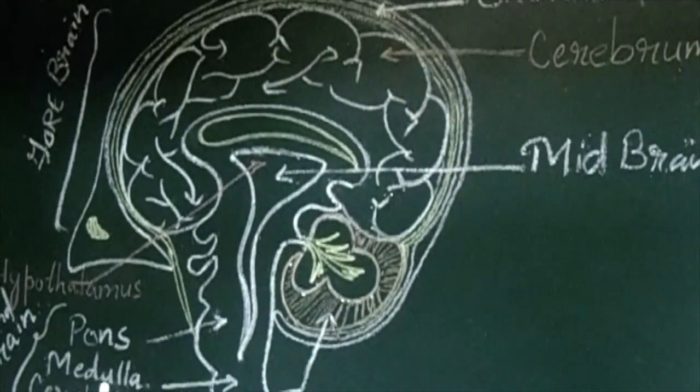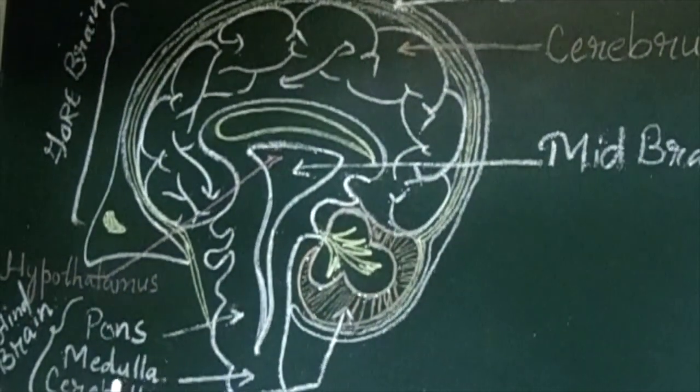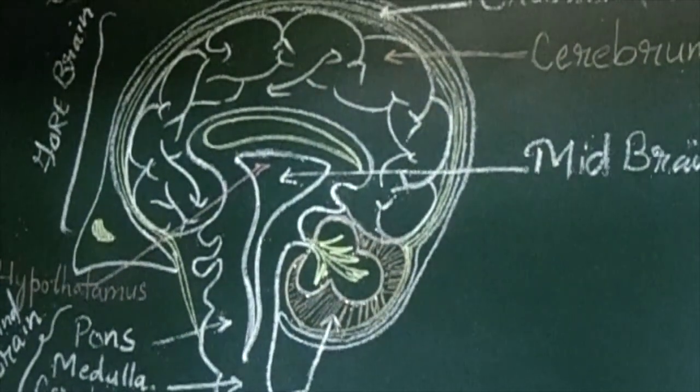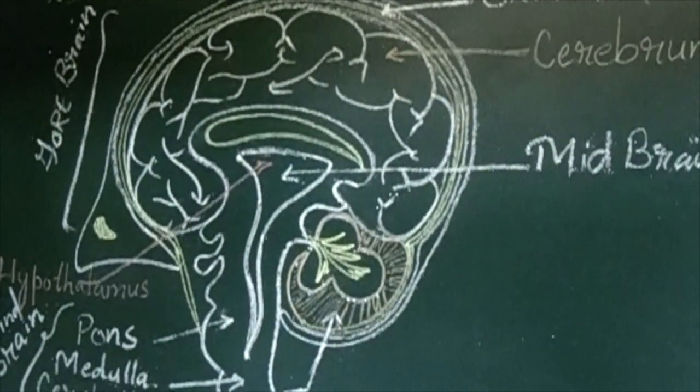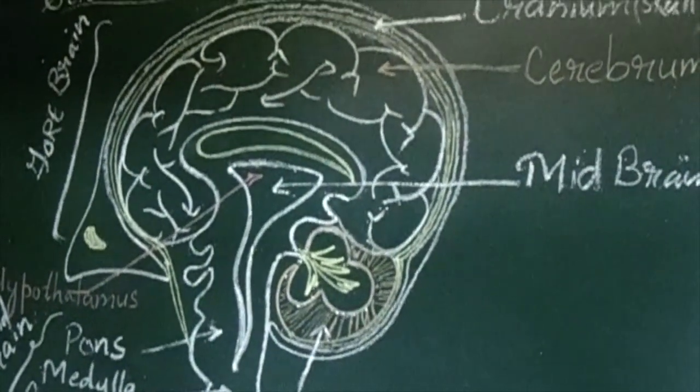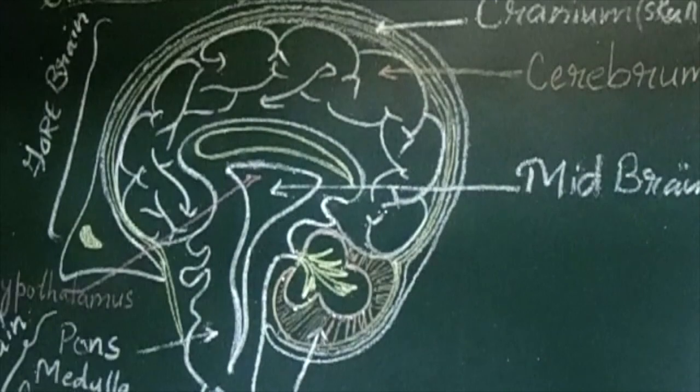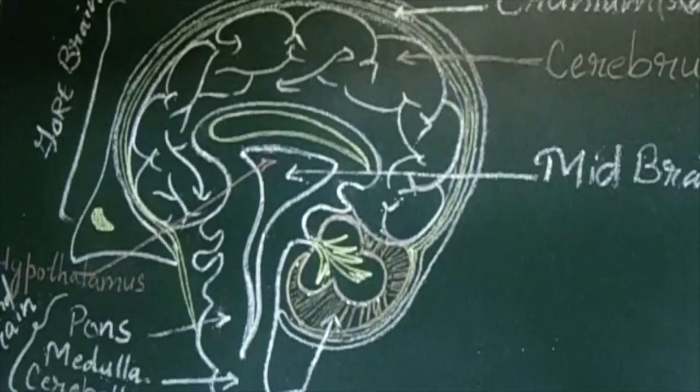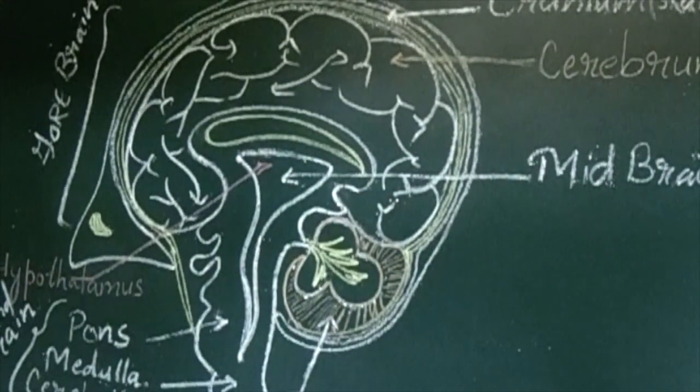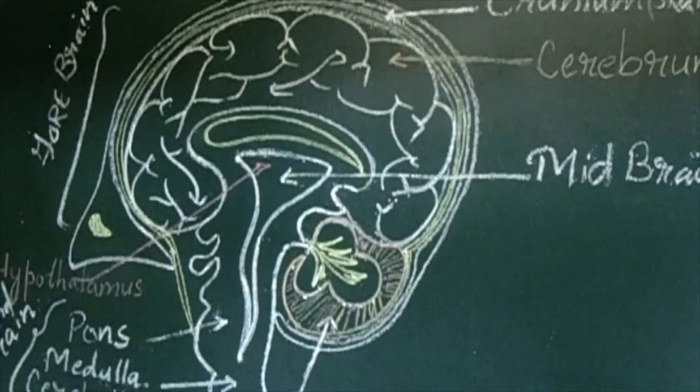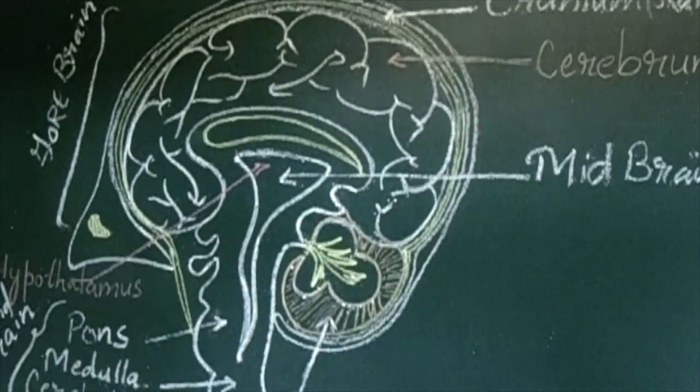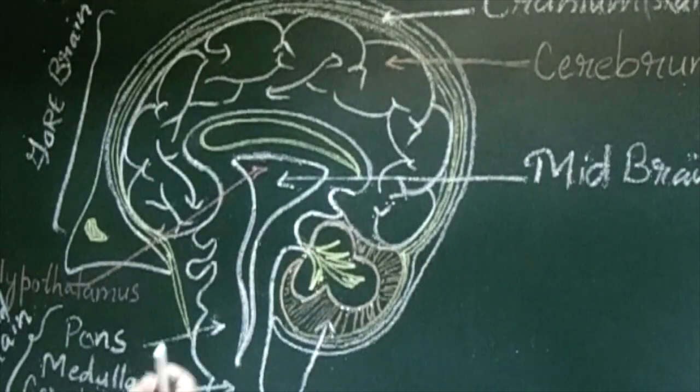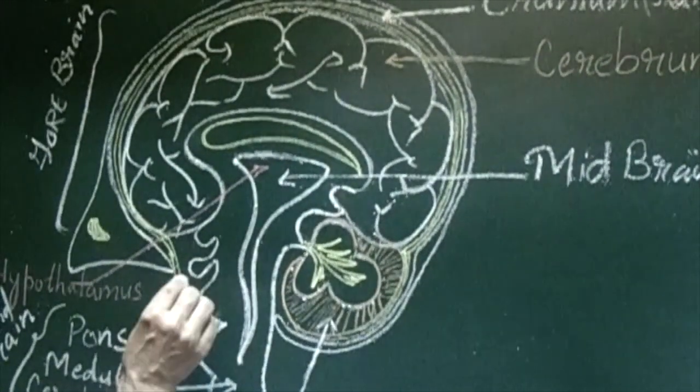Then we have medulla oblongata. What is its function? It controls all the involuntary actions of the body. Involuntary actions which cannot be controlled by human's will such as breathing, heartbeat, movement of digestive tract, blood pressure, salivation, vomiting, enzyme secretions and all other activities.